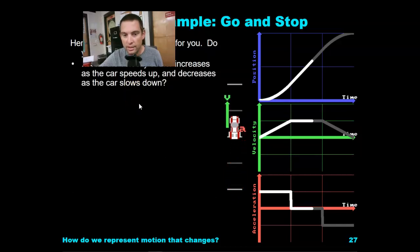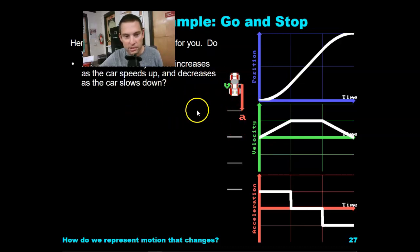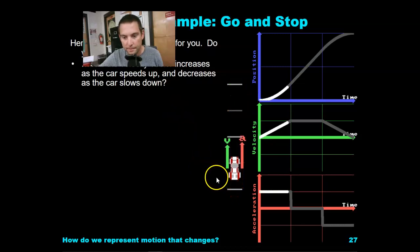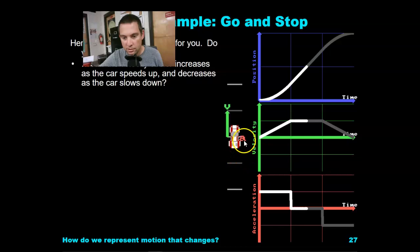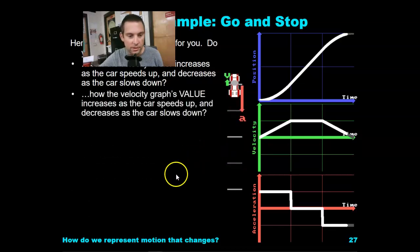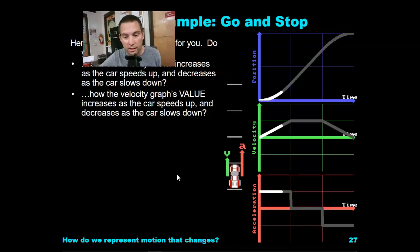You see how the velocity vector increases as the car speeds up — this is the velocity vector, and this is the acceleration vector. No acceleration during the constant speed phase. Then there's a big acceleration in the opposite direction. If we have acceleration in the opposite direction of velocity, we're going to slow down.